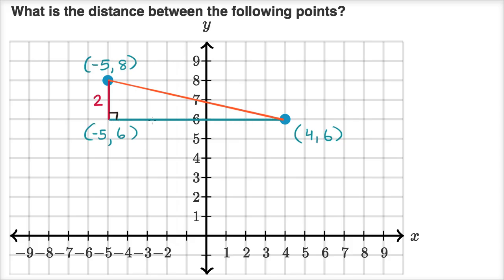Now what's the length of this line? Well you could count it out. One, two, three, four, five, six, seven, eight, nine. So it's nine. Or you could even say, hey look, we're only changing in the x value. We're going from negative five, x equals negative five, to x equals four. So we're going to increase by nine.